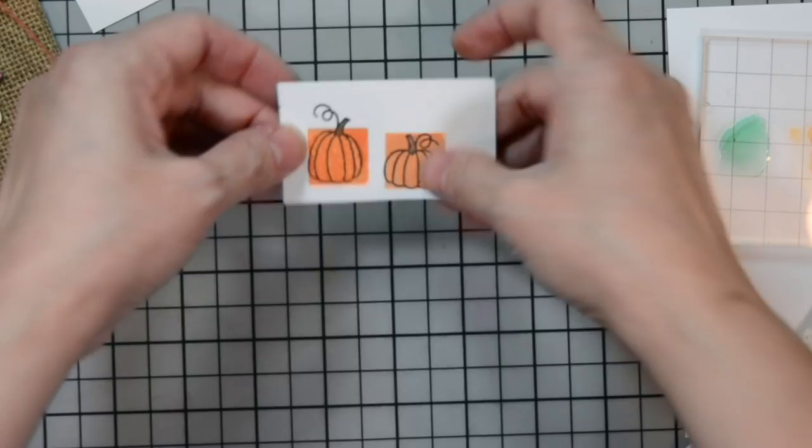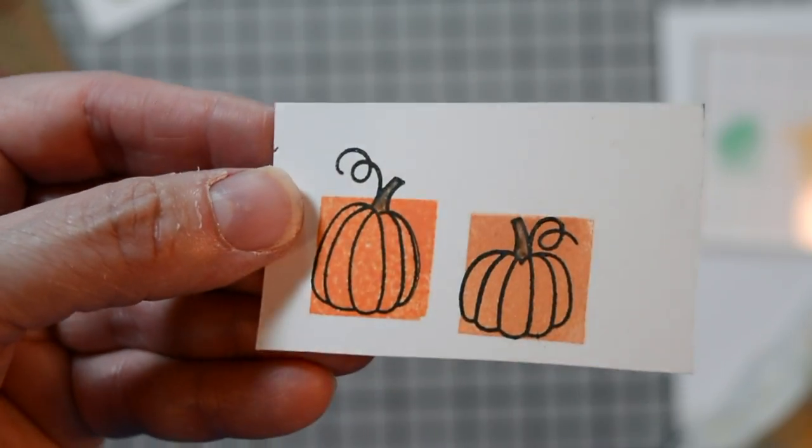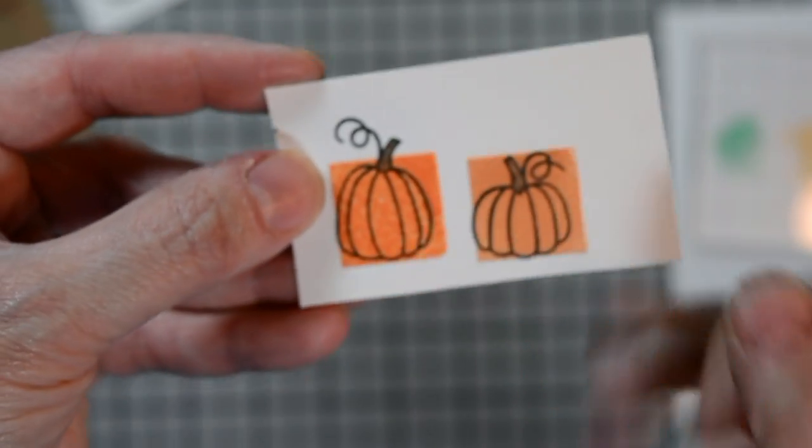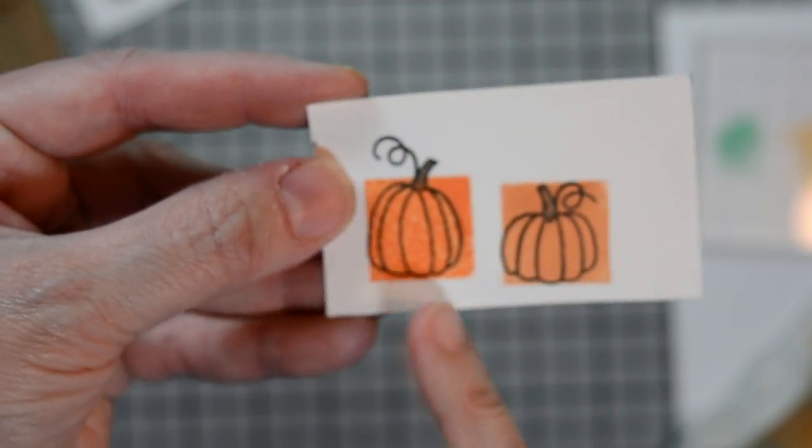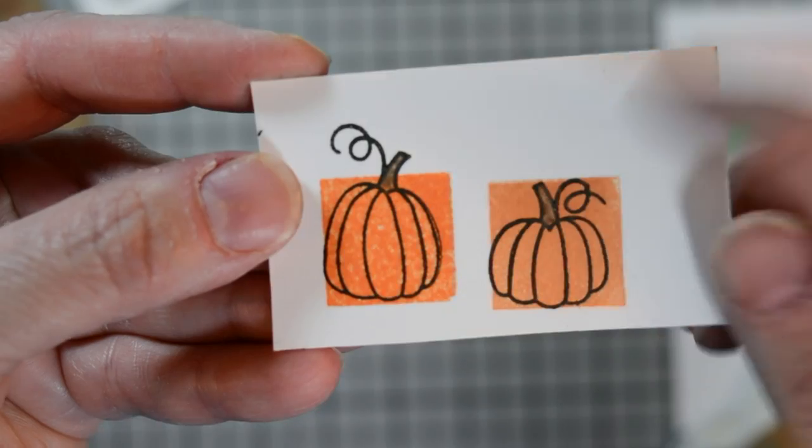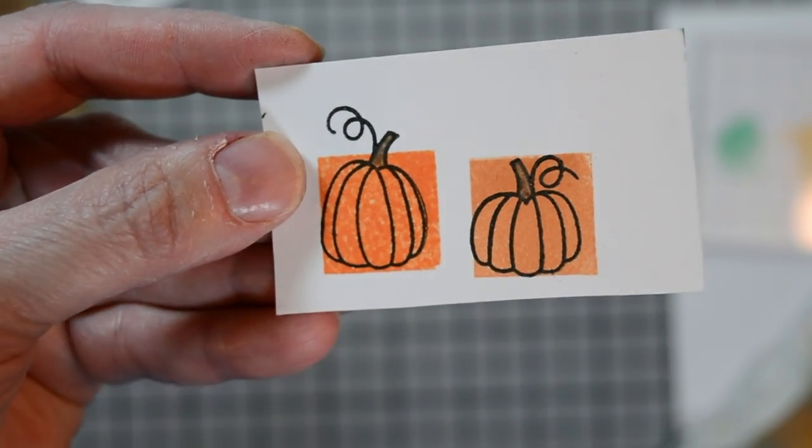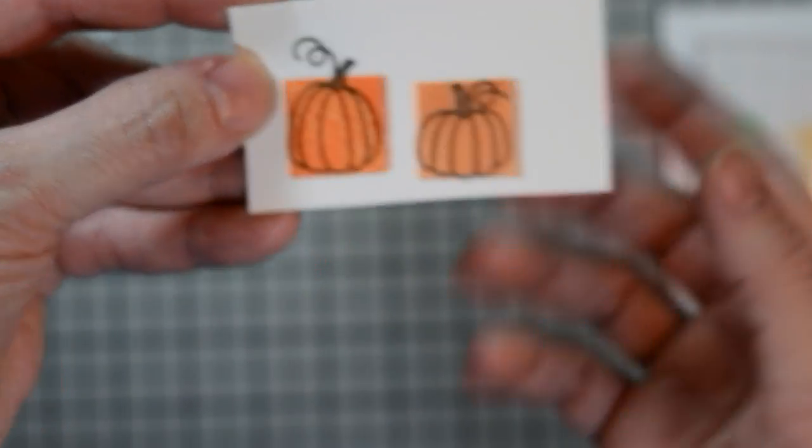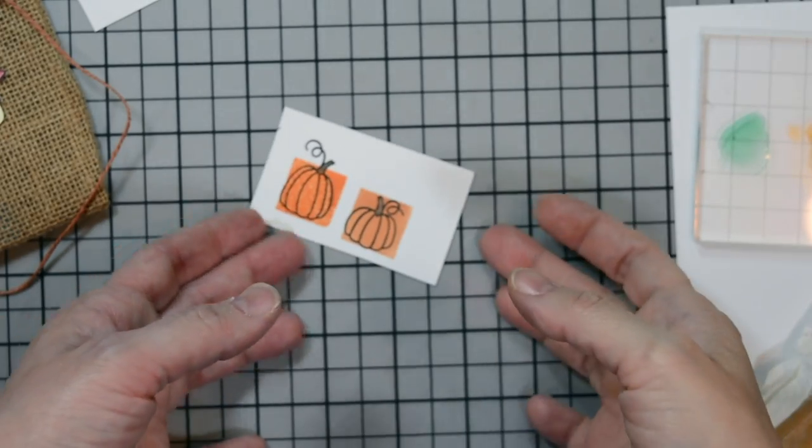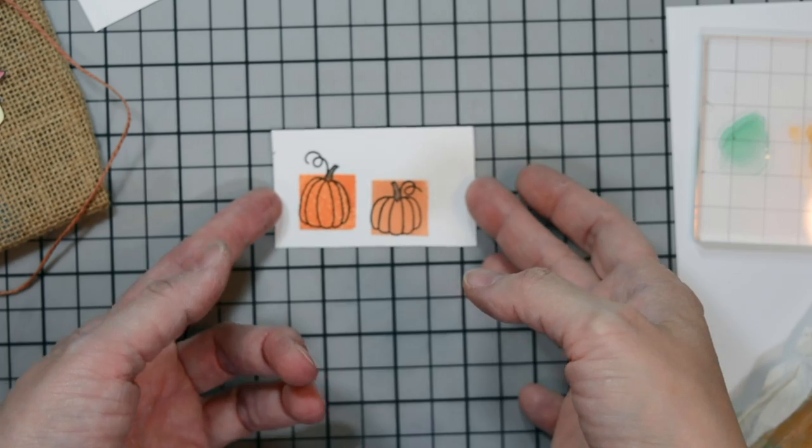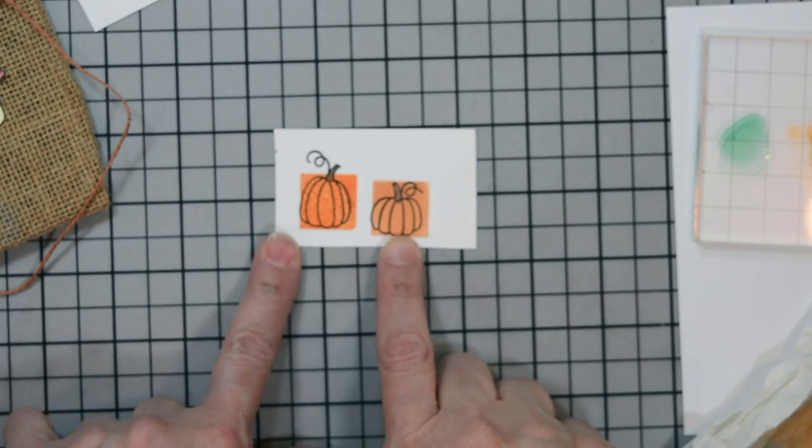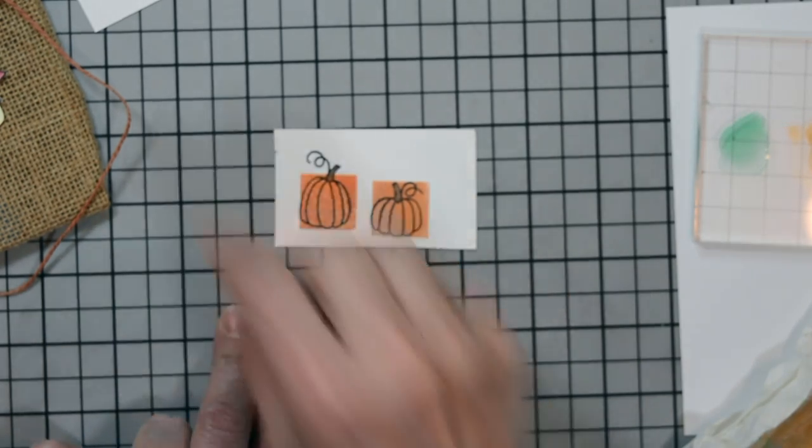Now all that's left is to cut these out. Let me show you up close. So you see how you have two different colored pumpkins now. The little stems are colored. There's no orange showing through. And you have nice coverage. So now we have to fussy cut our pumpkins and our leaf out so we can continue with our project.